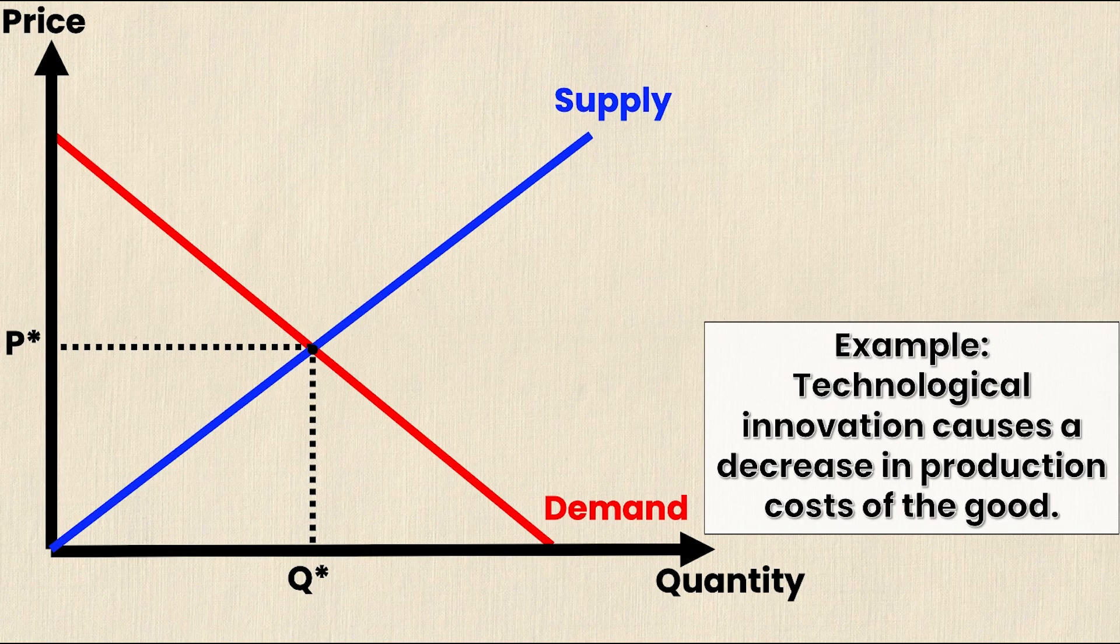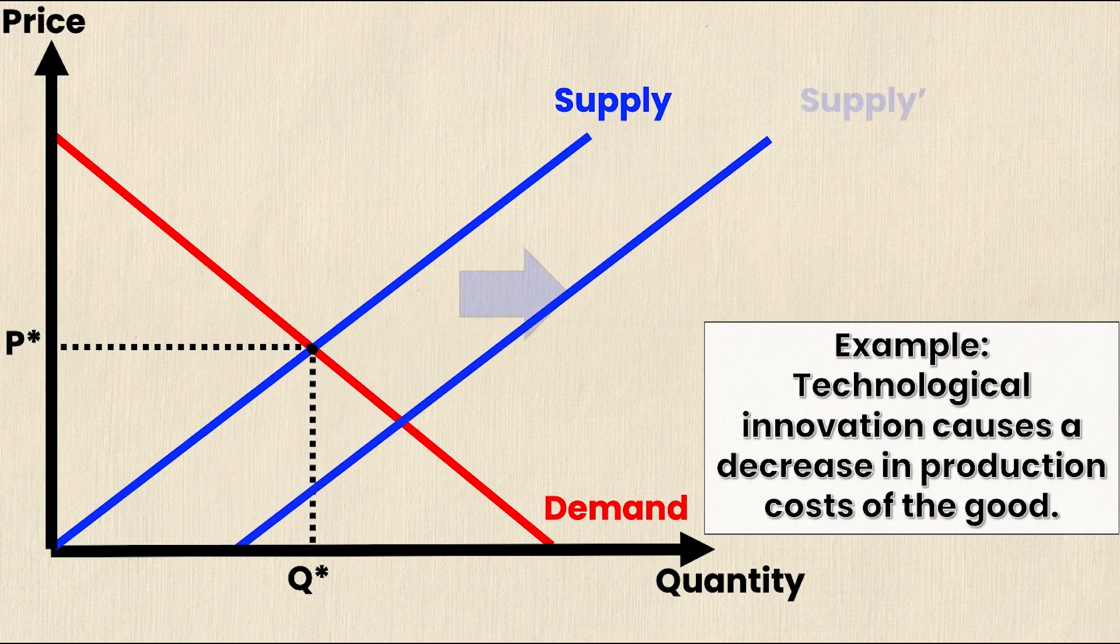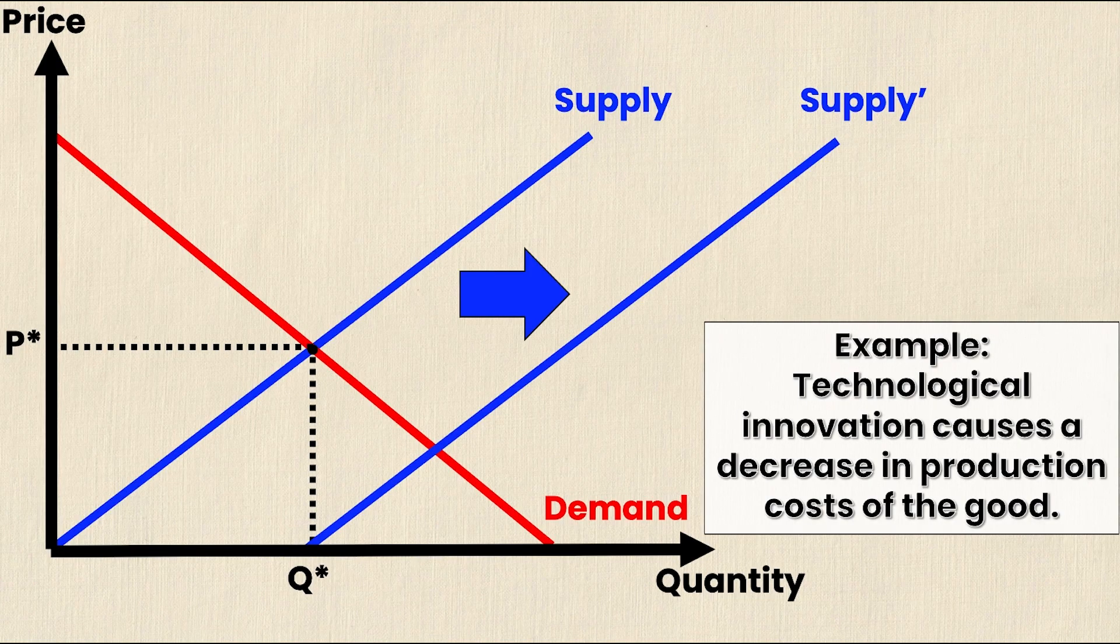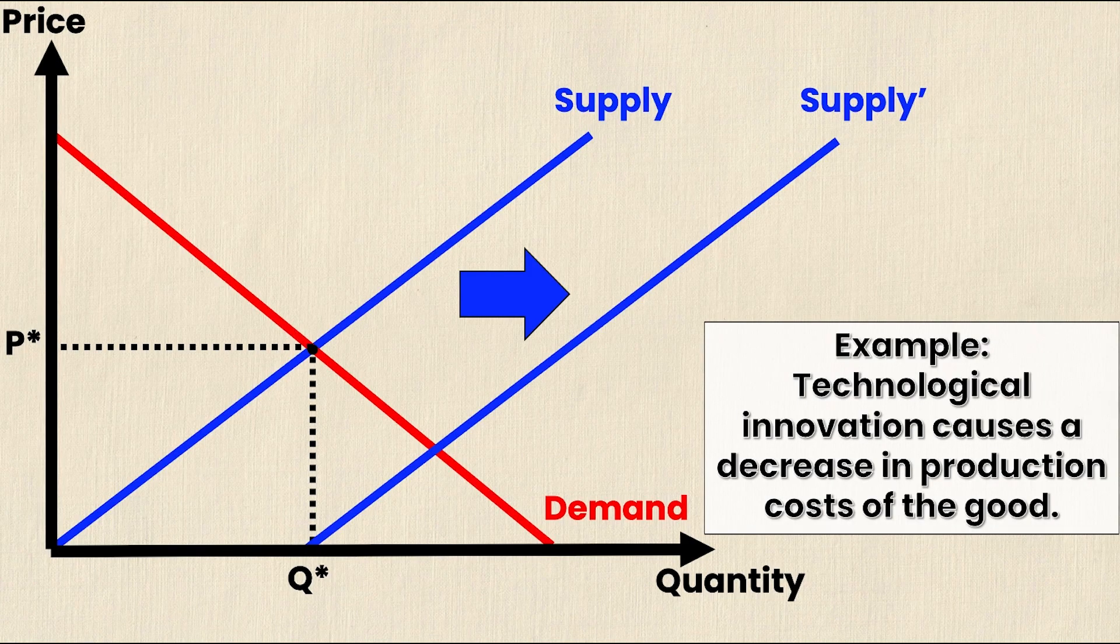This is going to cause a rightward shift as supply is going to increase and you'll notice that the new supply curve is denoted as supply prime and you'll see the little apostrophe next to it telling you that it's the new supply curve not the original.